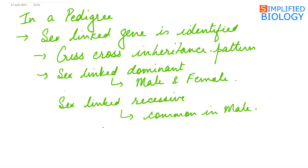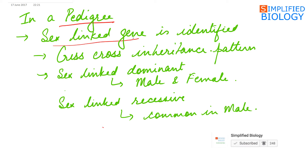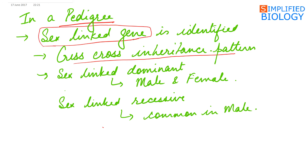At the end, let's see how to identify a sex-linked gene in a pedigree. A sex-linked gene in a pedigree can be identified by its criss-cross inheritance pattern — if a gene shows criss-cross inheritance, it is a sex-linked gene, meaning the gene from the father is being transferred to the grandson through the daughters. Otherwise, the gene is an autosomal gene. Sex-linked dominant genes express themselves in both males and females, while a sex-linked recessive gene is more common in males.